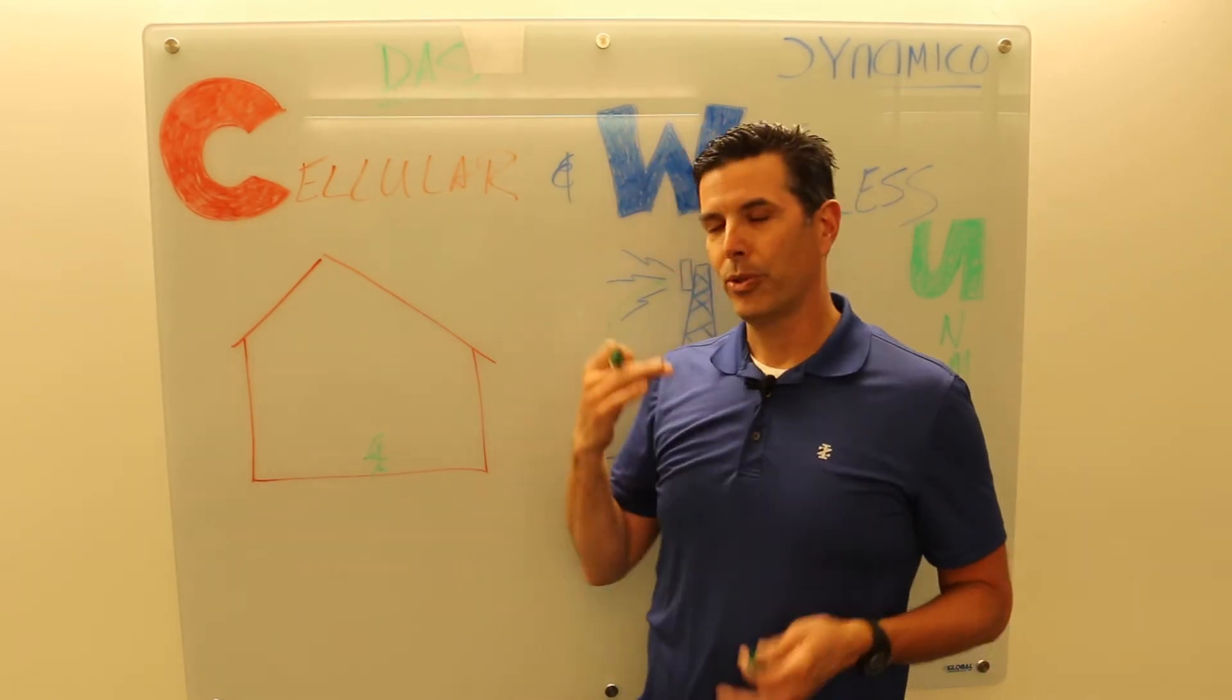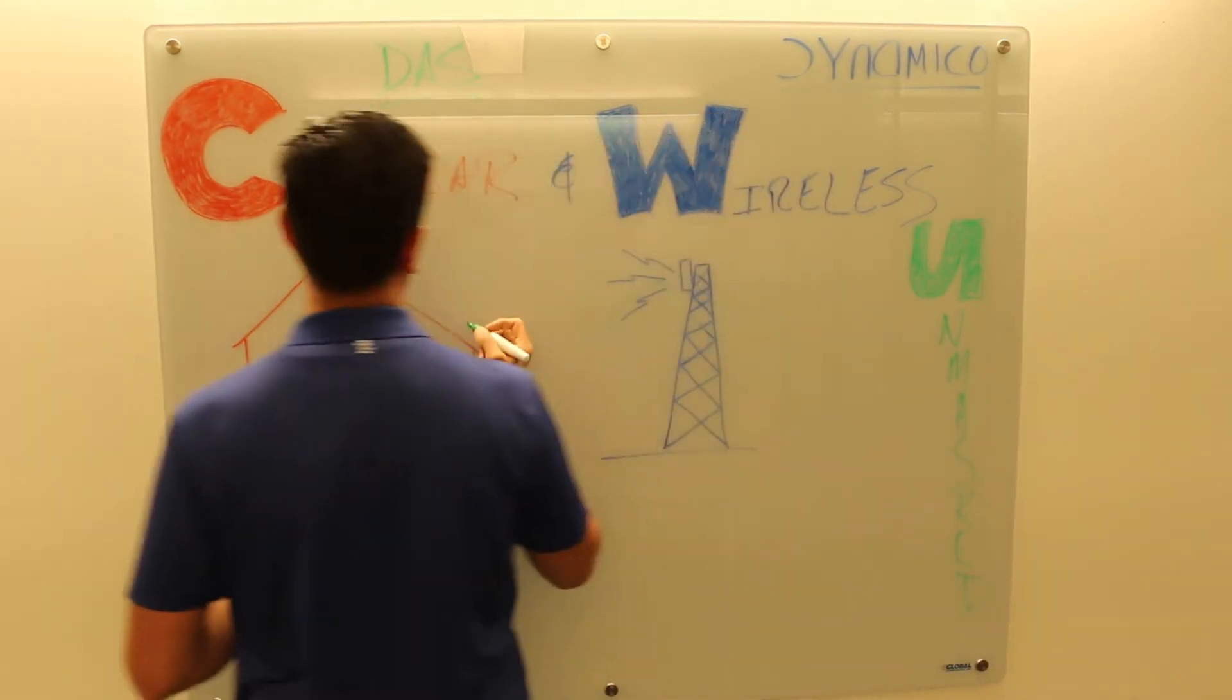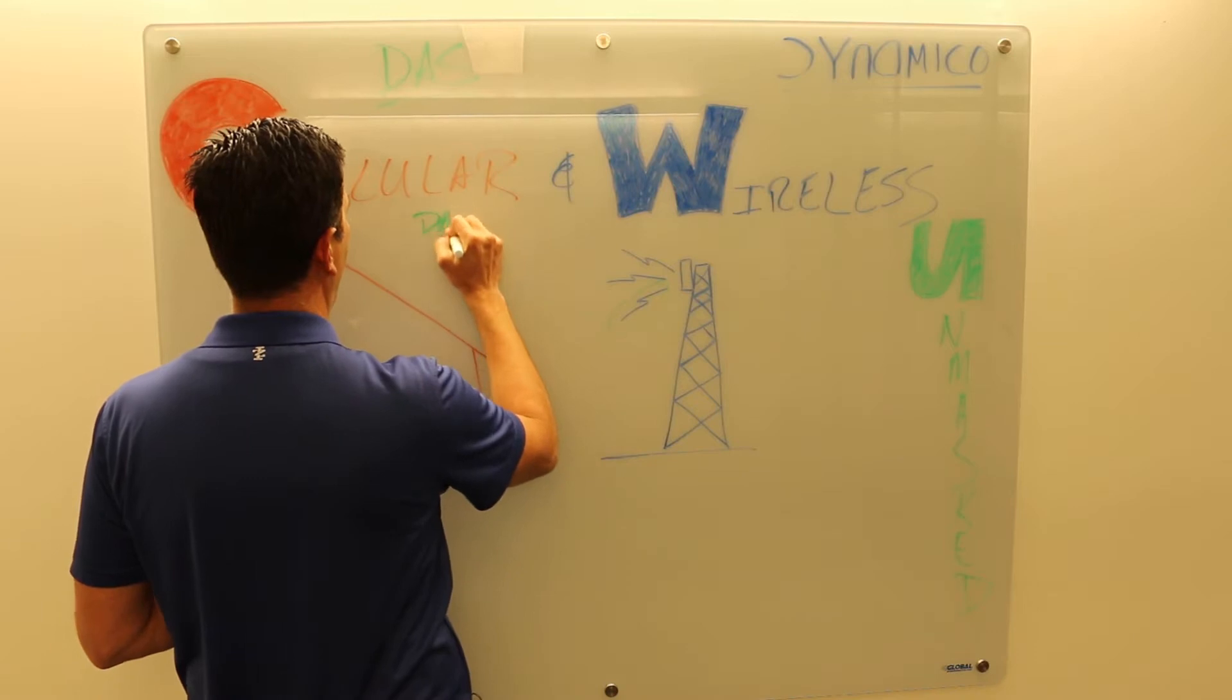There's a couple different ways to do it, which we'll talk about. But there is one nomenclature item I wanted to address first: there are a number of types of DAS and there's a nomenclature floating around, passive versus active DAS.